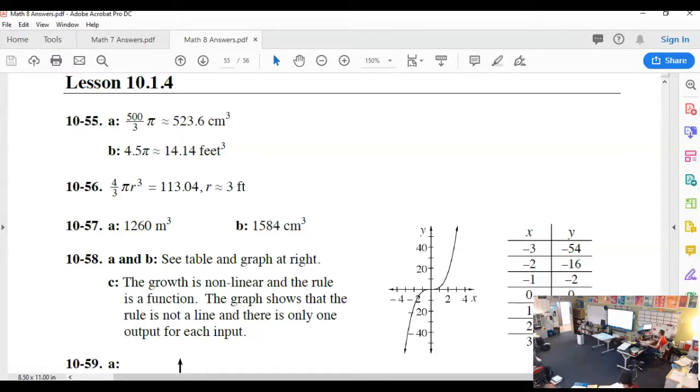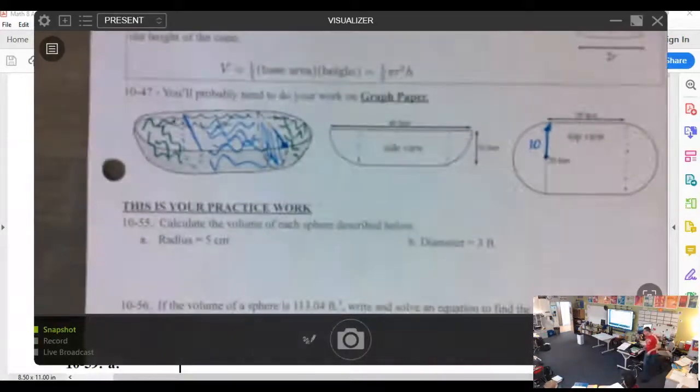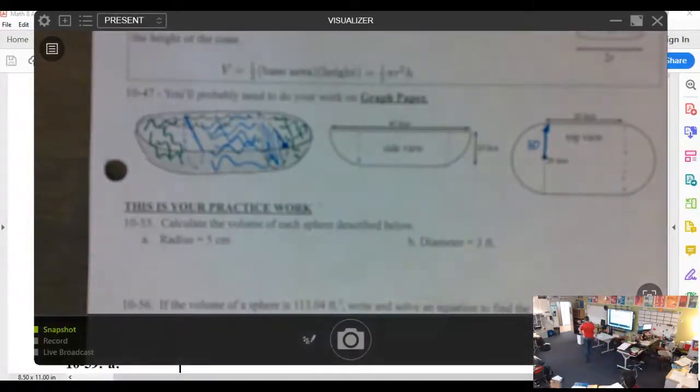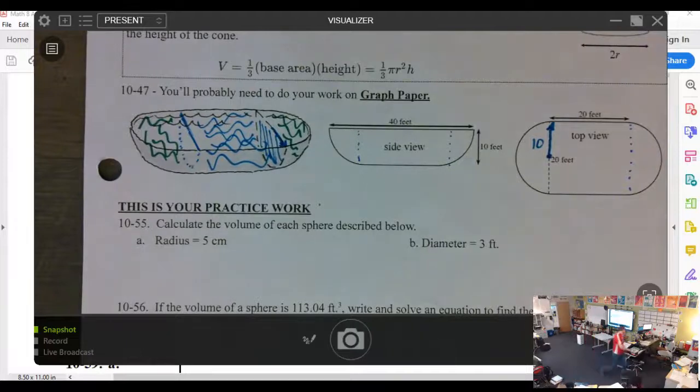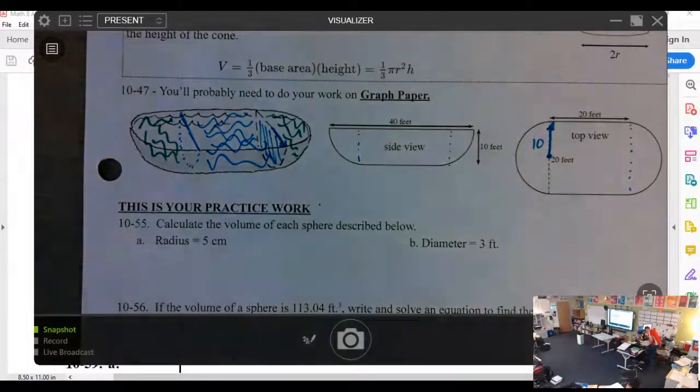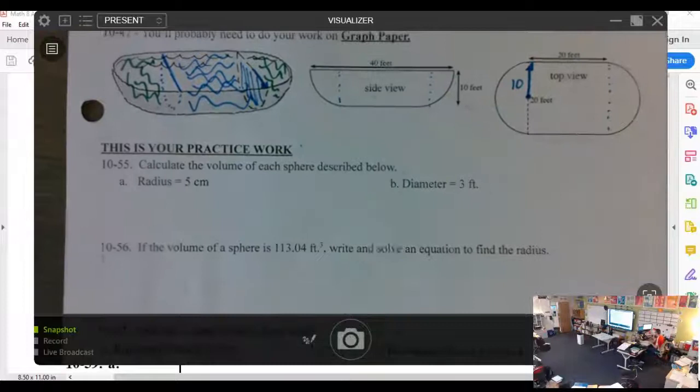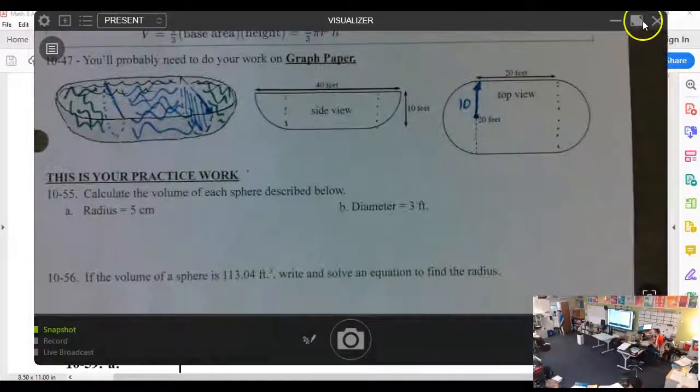Alright, 56, volume of a sphere is 113.04. They're giving us the volume so what we have to set up is that value 113.04, that's equal to four thirds pi r cubed. So we have to work it backwards and I bet a lot of us maybe struggled with this because we have to do this in a really specific order.